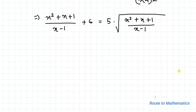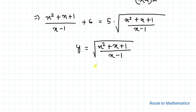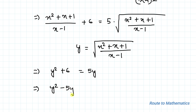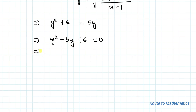Now let's take y = √((x² + x + 1)/(x - 1)). By substituting, we have y² + 6 = 5y. Taking 5y to the left-hand side gives y² - 5y + 6 = 0, which is a quadratic equation. Let's factorize it.